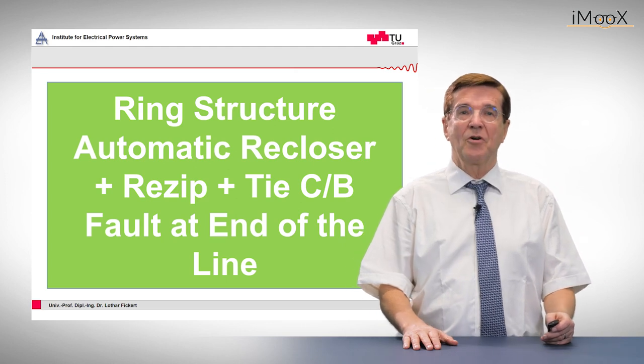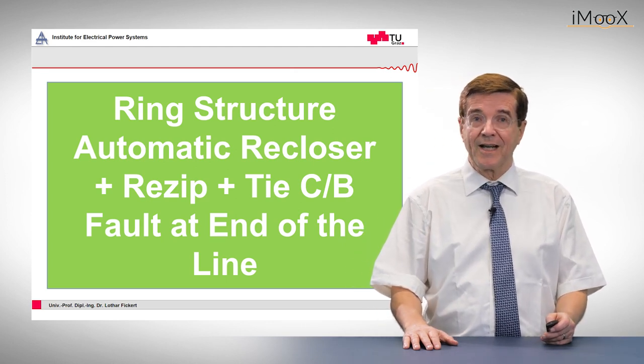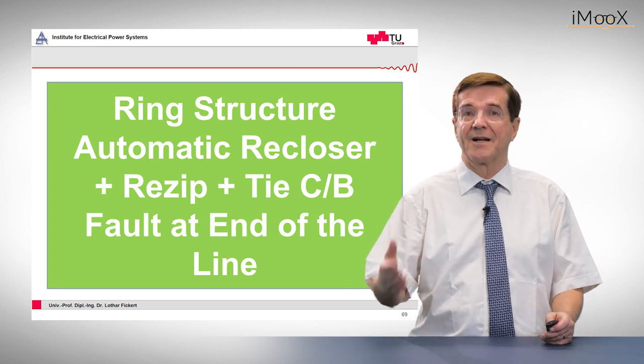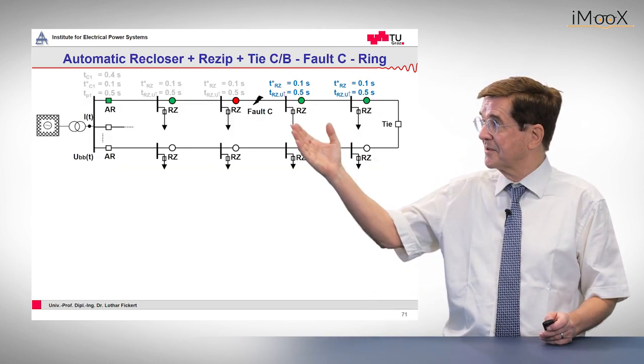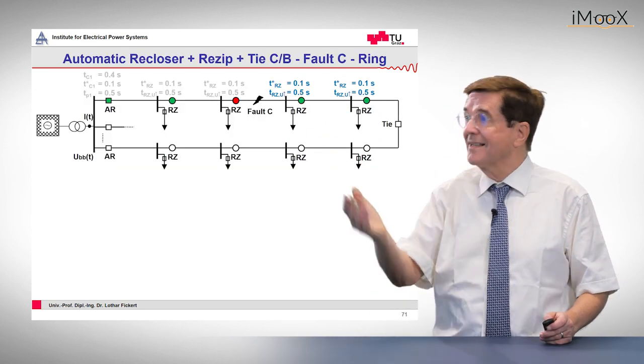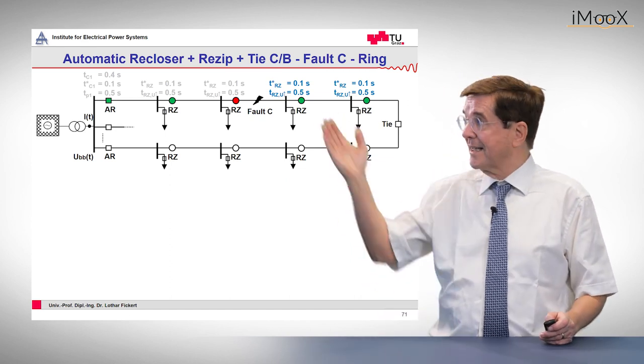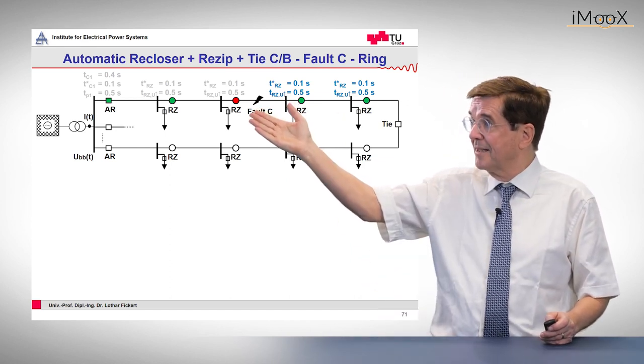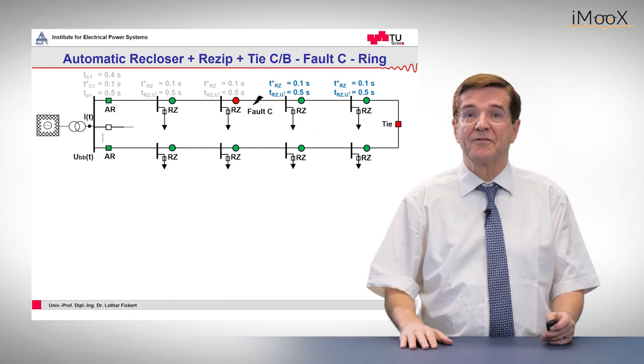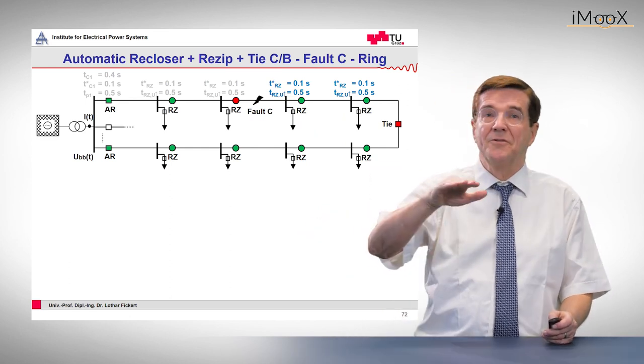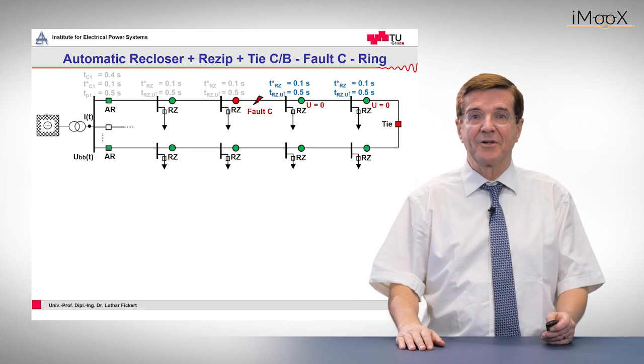But now, as you all know, such radial networks can be improved by adding tie breakers at, for example, the end of the line. And here we have such a structure. We extend it by adding a tie circuit breaker at the end of the line, and now we can energize a faulty line from the rear side. Let's see how it works.